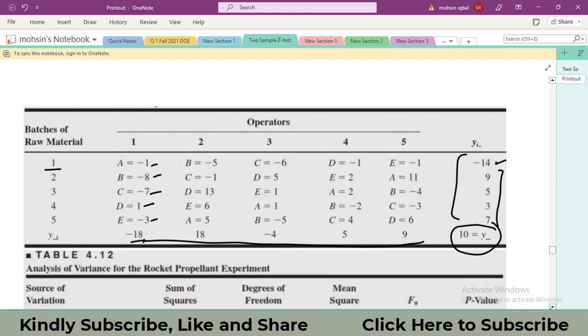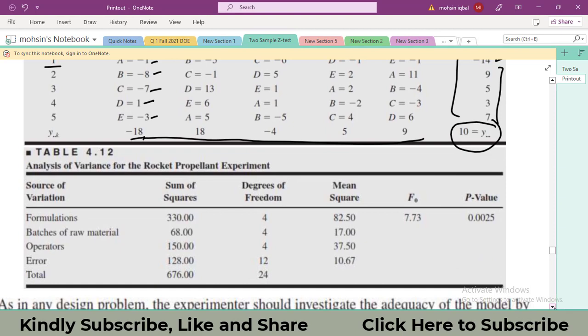These are important for you to perform the calculations. And y triple dot, the grand sum, it comes out to be minus 10. Now in the next part of the video, I will show you the ANOVA table, our conclusions, and our decision on the hypothesis. Thanks a lot for watching the video. Bye.